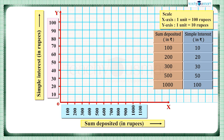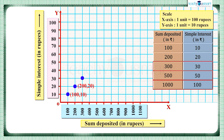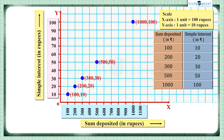Now we plot each ordered pair: (100, 10), (200, 20), (300, 30), (500, 50), and (1100, 110). We then join the points and get a linear graph.